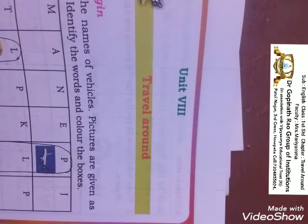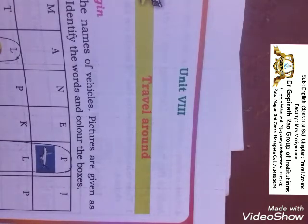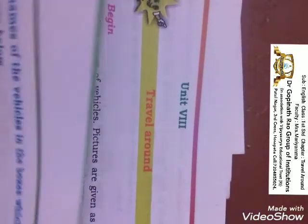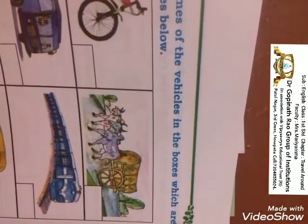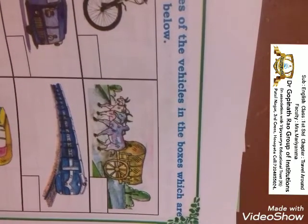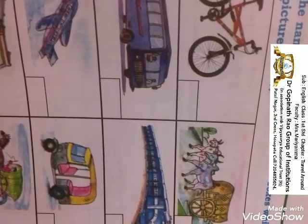Travel Around means about the vehicles. You move from one place to another in train, buses, cart, aeroplane. Now you can see the vehicles here: cycle, bus, aeroplane, tractor, scooter, motorcycle, bullock carts, train, auto rickshaw, boat. You have seen all the vehicles and you have travelled in them also.